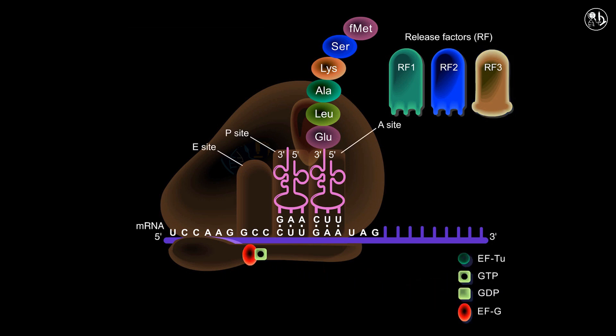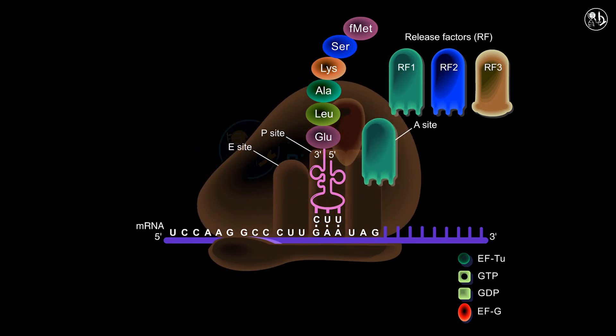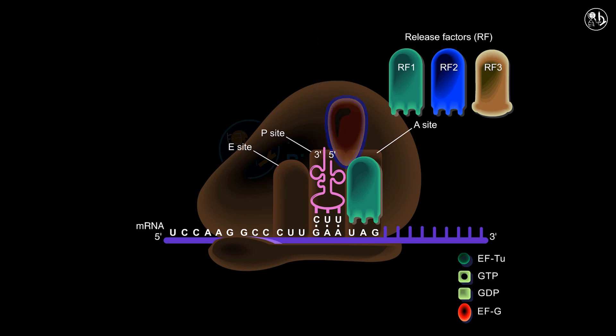A stop codon is introduced into the A site as a result of elongation and ribosome translocation. The binding of RF1 or RF2 to the stop codon prompts peptidyl transferase to detach the fully formed polypeptide from its tRNA in the P site of the ribosome.